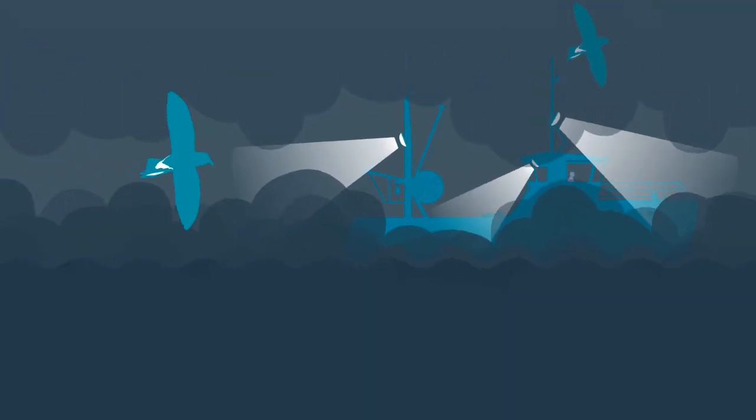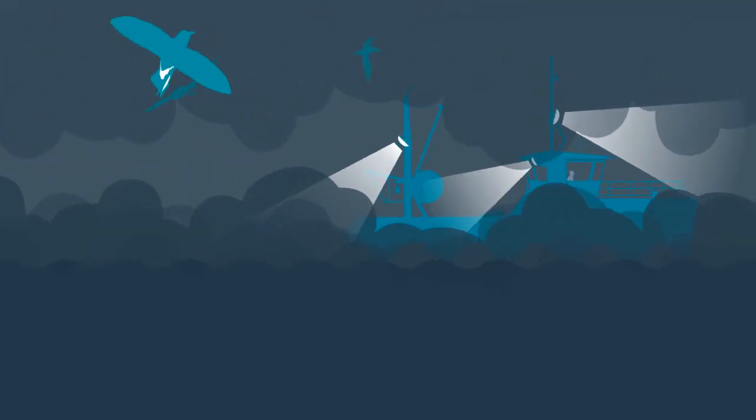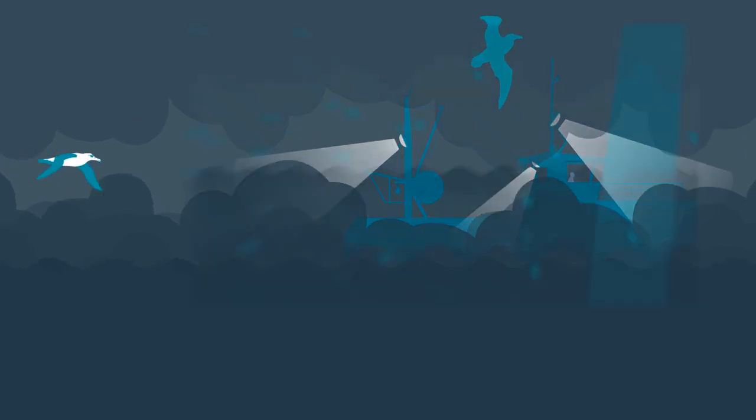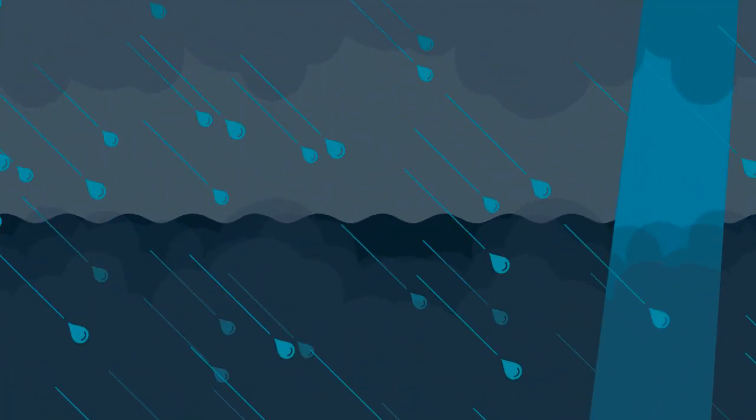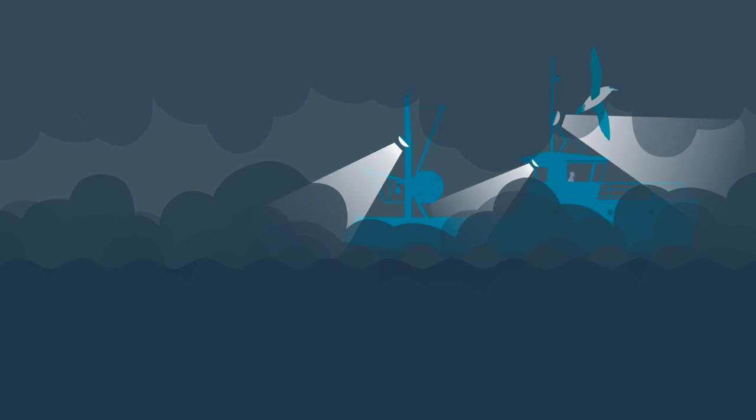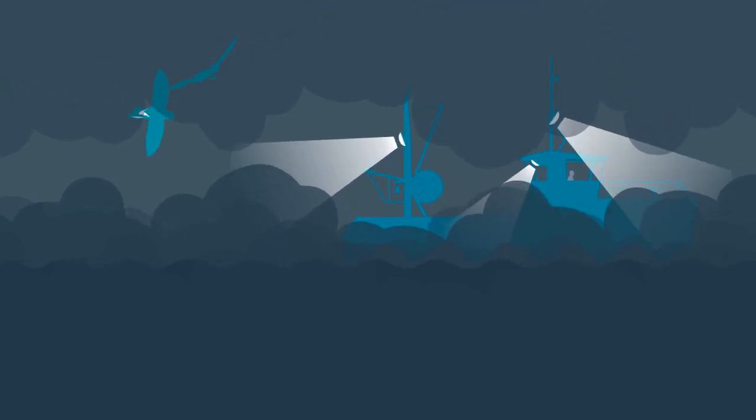Seabirds are attracted to light, especially in low cloud or fog. Seabirds can potentially collide with a vessel resulting in injury or death. They can also arrive on deck seeking shelter from bad weather.